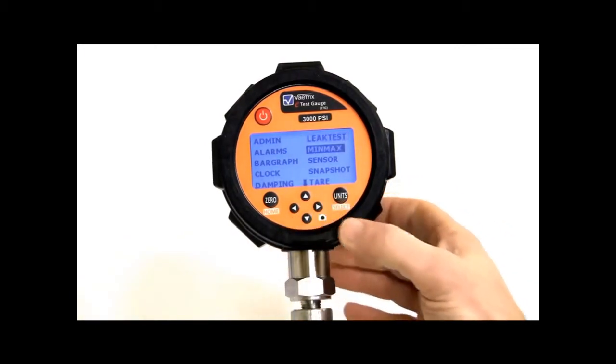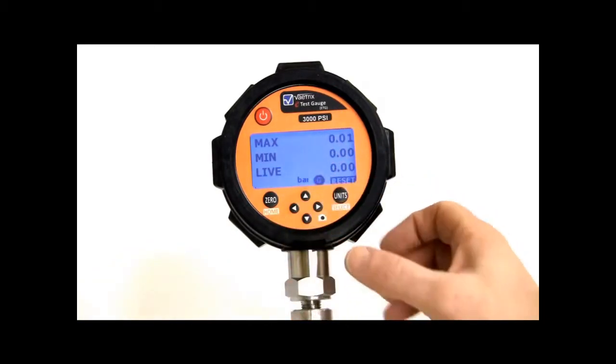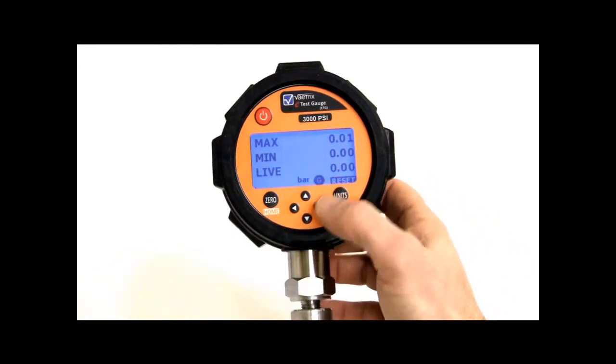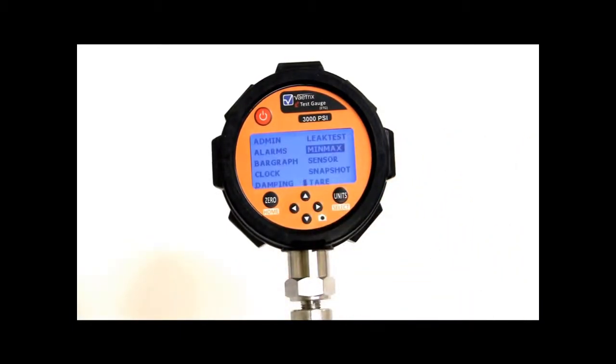Min max, so it's a live screen which gives you the max, min and live readings. It'll record, basically we don't have anything hooked up to pressure. It'll record live, track that. Now to reset it, I can go back under here, hit select and reset it. At any time it'll reset. So I go back up in the menu.